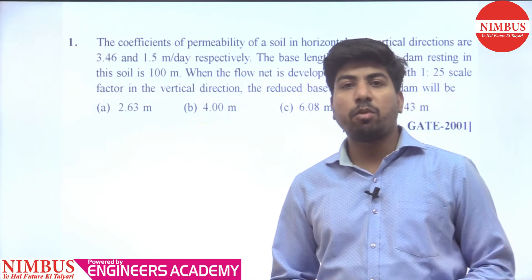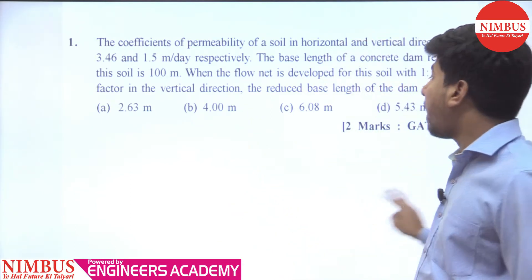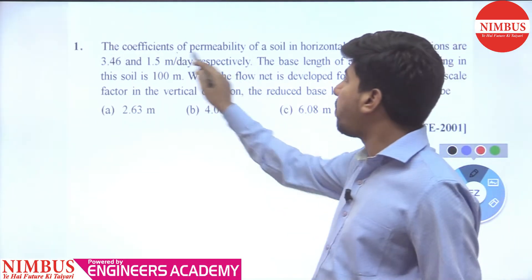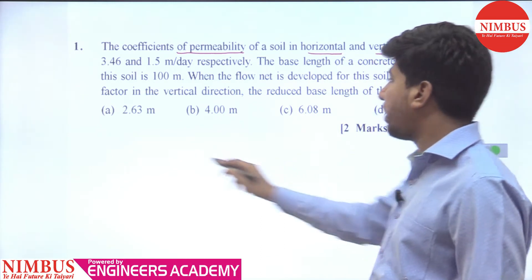Hello friends, once again welcome you in Nimbus Learning powered by Engineers Academy. So question number one, it is asked in GAE 2001 in two marks. The coefficient of permeability of a soil in horizontal and vertical direction, it means kx and ky.